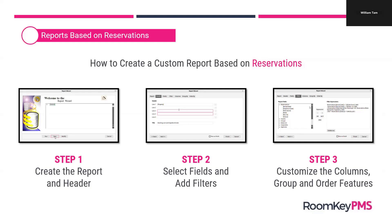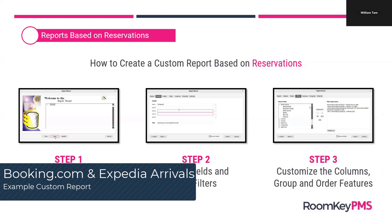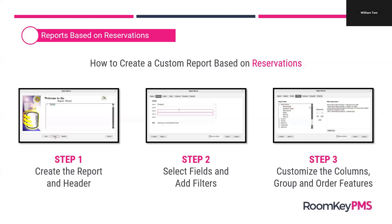I've got three short videos that will take us through each of these steps using an example report. The report we're going to create will show us Booking.com and Expedia.com arrival reservations. Let's take a look at how to create the report and that header information right off the bat.